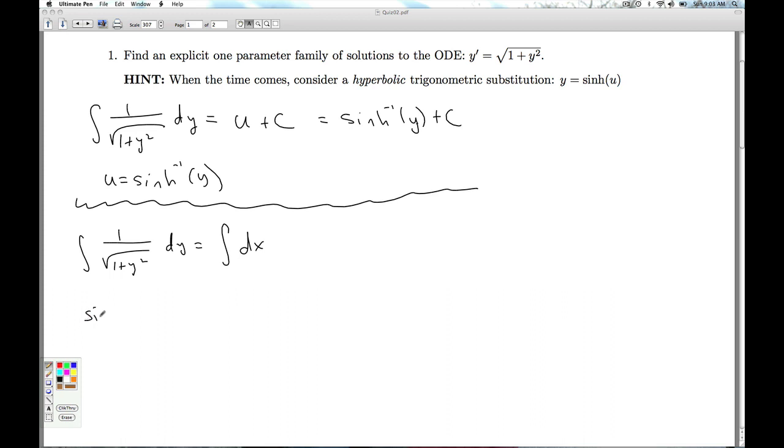So I get the inverse hyperbolic sine of y plus a constant is equal to x plus another constant. I gather the constants on both sides. I get sinh⁻¹(y) = x + C. And then to solve for y, I take the sinh of both sides and I get that.